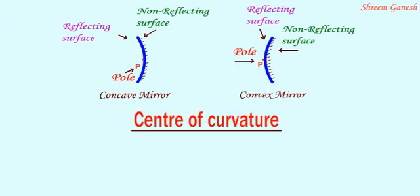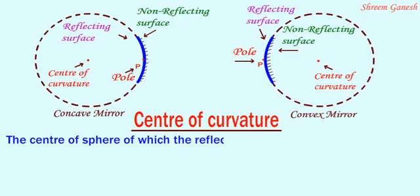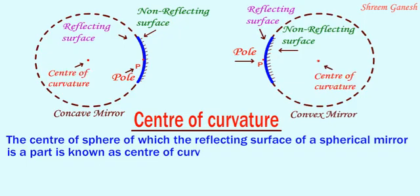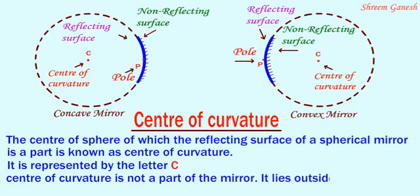Center of curvature. The reflecting surface of a spherical mirror is a part of a sphere. The center of the sphere of which the reflecting surface of a spherical mirror is a part is known as center of curvature. It is represented by the letter C. Center of curvature is not a part of the mirror; it lies outside its reflecting surface.